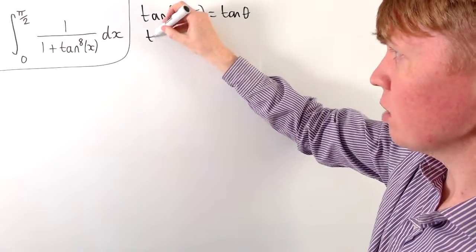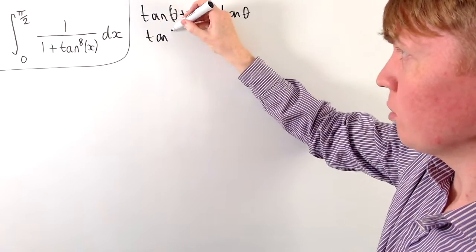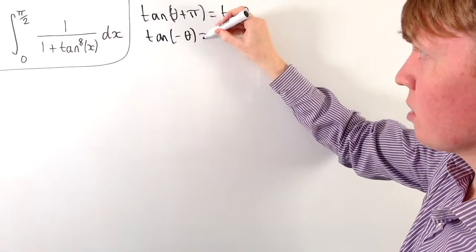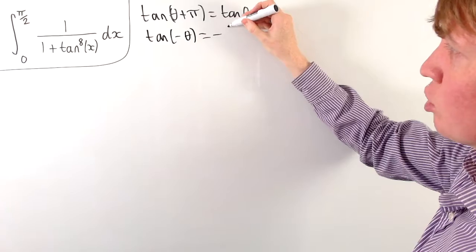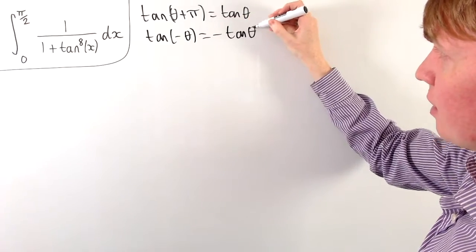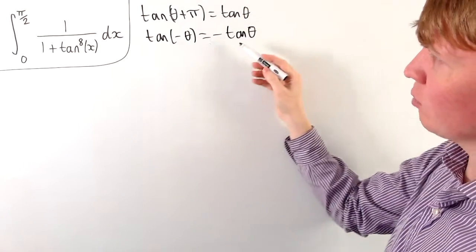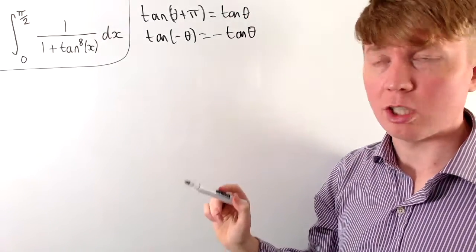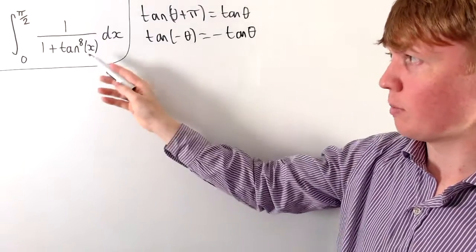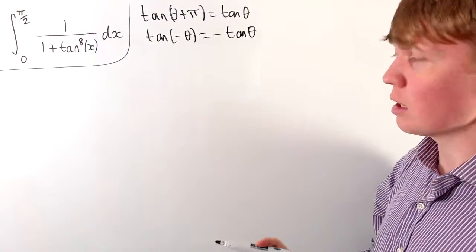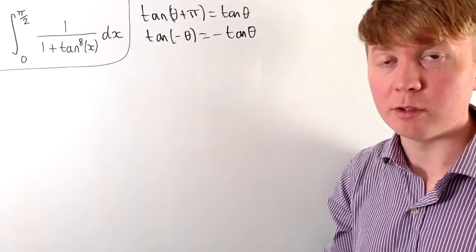We could try something else, like maybe the fact that tan(−θ) is equivalent to the negative of tan(θ). But again, if we used a substitution, we would end up integrating over some negative values, which doesn't seem particularly helpful here.